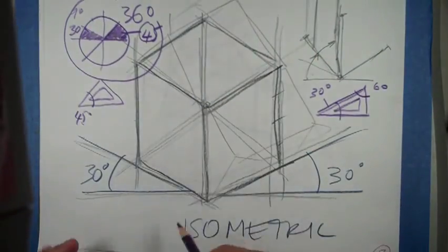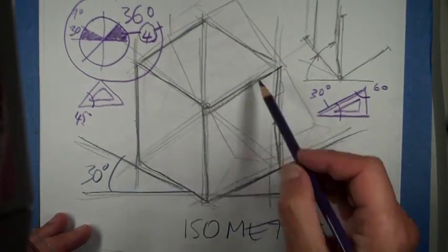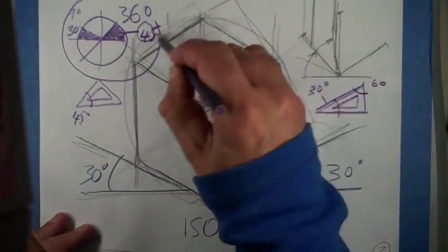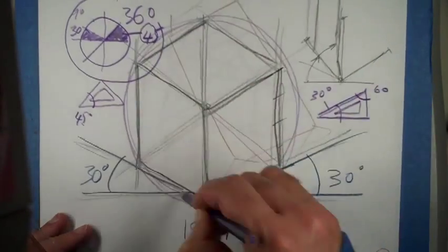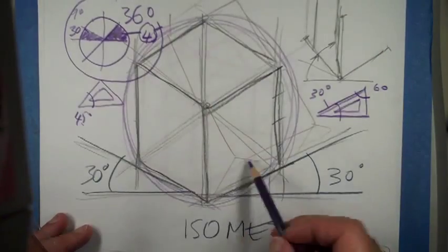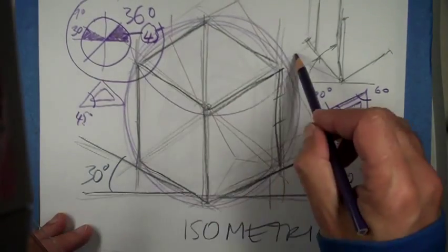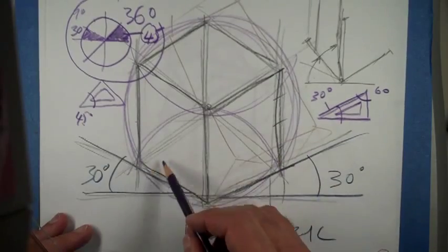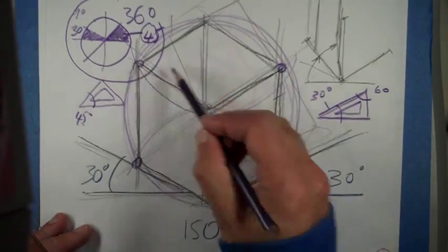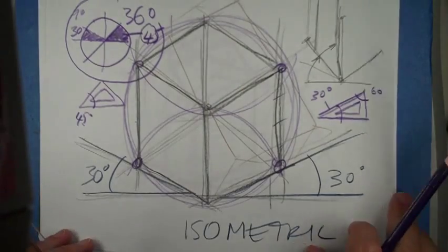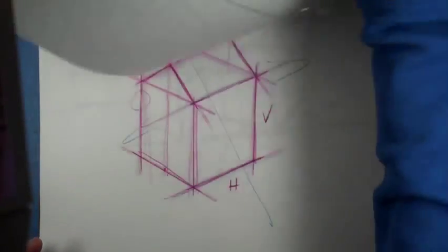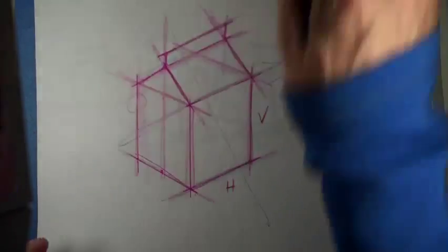The advantage of that angle is that for a cube you can easily inscribe it into a circle. With a compass you could draw it like that and it would give you all the points to draw a cube that way, but you can experiment.